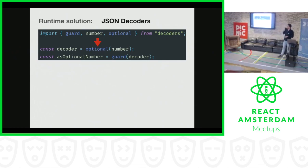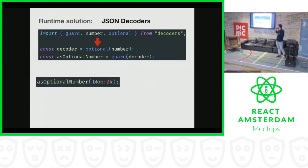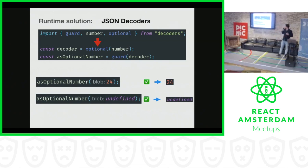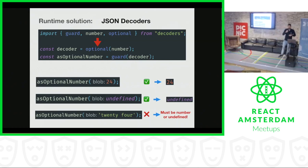Here's a similar example — now it's not just a number decoder, but it's wrapped inside an optional decoder. That's also nice about decoders: they are composable, you can nest them into each other. This decoder will check whether the input is either a number or undefined. It's successful, but if you put in a string, it will still fail because you're only checking for undefined or a number.